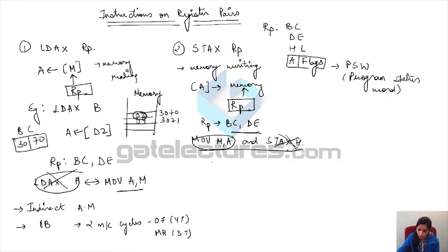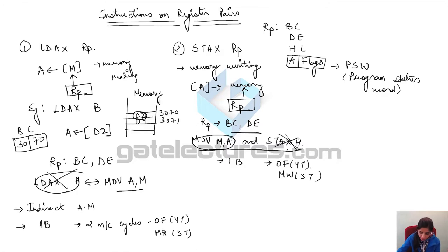The size of STAX is one byte and it has two machine cycles: opcode fetch and memory write. This is a 7 T-state long instruction.